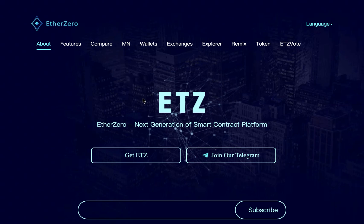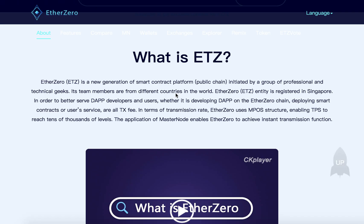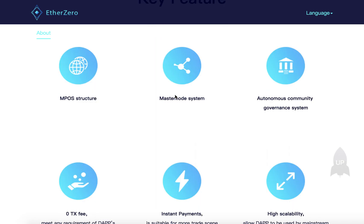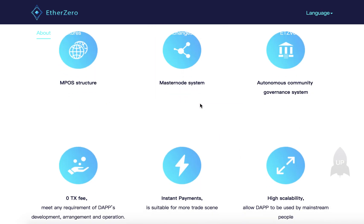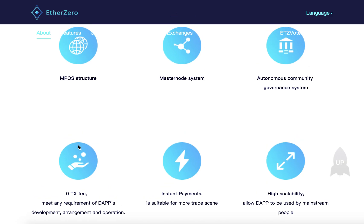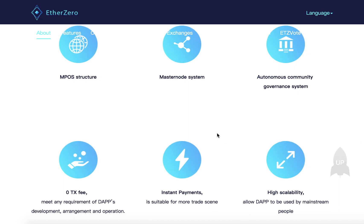Ether0 is a hard fork of the Ethereum protocol. The main features of this project are a new masternode system, an autonomous community governance system, zero fees, instant payment, and high scalability. I'm going to go deeper into each of these features.